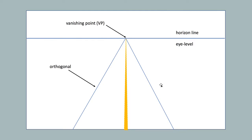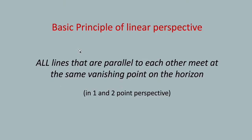These receding parallel lines — whether on a box, a road, or anything else — are technically called orthogonals, though I'll just refer to them as receding parallel lines. Linear perspective can really be reduced to one sentence: all lines that are parallel to each other in the real world — roads, boxes, tables, chairs, rooms — meet at the exact same vanishing point, and that vanishing point is on the horizon.